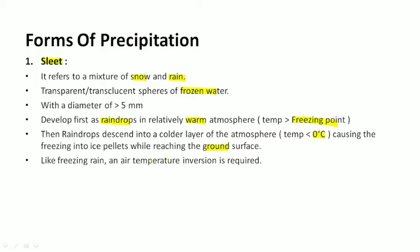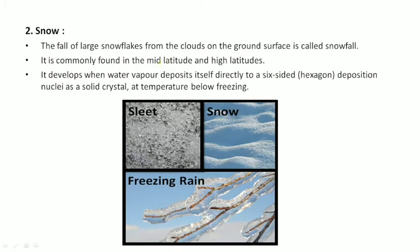Like the freezing rain, to form sleet, the condition of temperature inversion is required. I've already discussed about the concept of temperature inversion in one of my previous videos. Just check the link in the description, or you will also find the video in my playlist. You will get a link so you can check. The next form is snow.